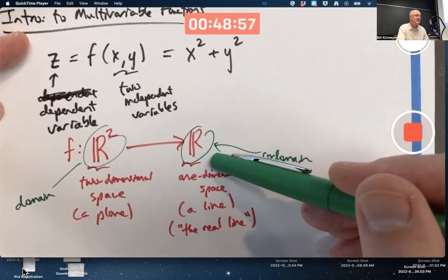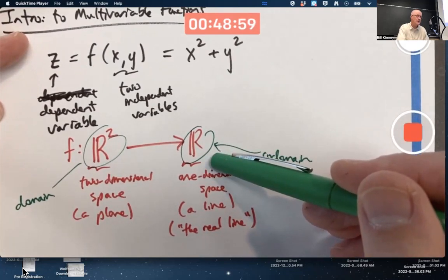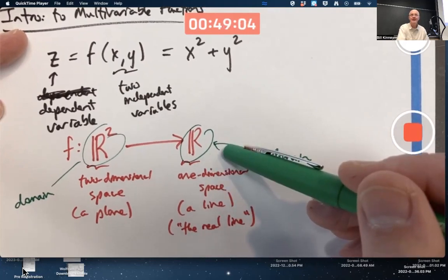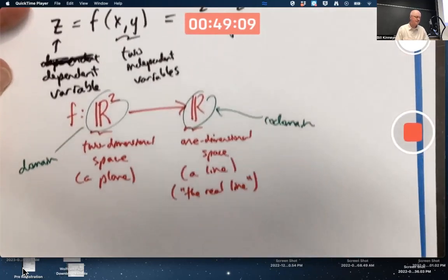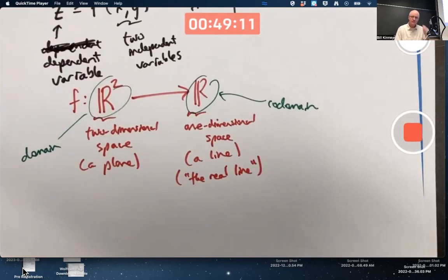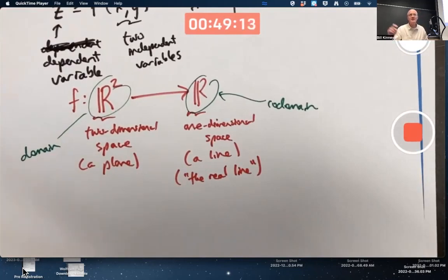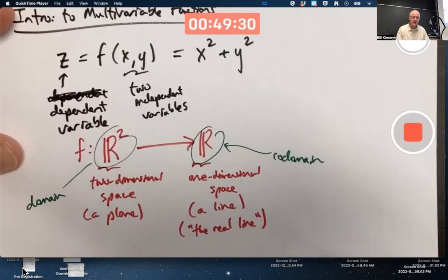Even though this real number system, this co-domain, includes negative numbers, we're never going to get a negative number out of this if we only allow ourselves to plug in real numbers for X and Y. Because of that, the function is said to be not onto. Not every possible number in the co-domain is a possible output. But how do you graph this? With ordinary calculus graphs, the X-axis is the independent variable and the Y-axis is the dependent variable.